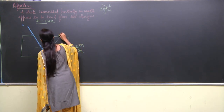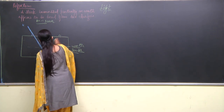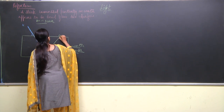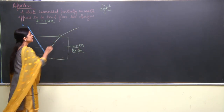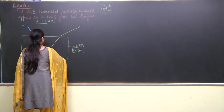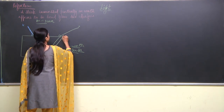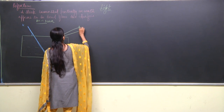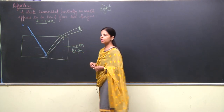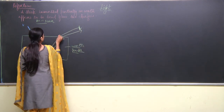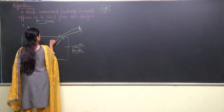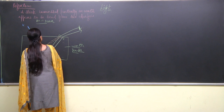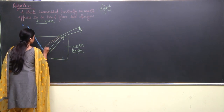It moves away from the normal - after refraction it is coming like this, I can name it as X. One more ray coming from here, I can name it as D, and it also gets refracted and I can name it as Y. When the person observes from here, if we try to extend these rays backward, we get a point over here.